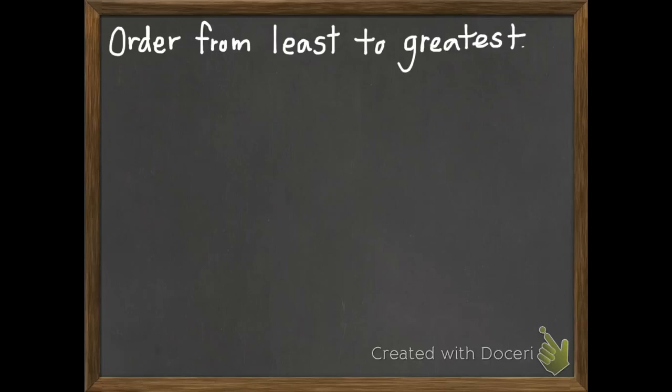This time I want you to order them from least to greatest. So we have three decimals, 34 hundredths, 3 tenths, and 37 hundredths. Once again, I want you to pick one of those strategies, draw pictures, draw a number line, do something to help you figure out which one is least to greatest.